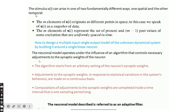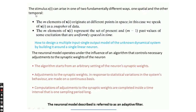The main characteristics of the algorithm are as follows. First, the algorithm starts from an arbitrary setting of neuron synaptic weights — meaning the synaptic weights are initialized to any arbitrary value when the algorithm starts. Second, the adjustment of the synaptic weights in response to statistical variations in the system behavior are made on a continuous basis.